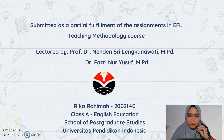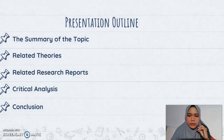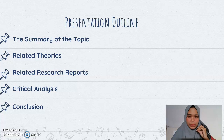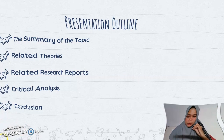For the presentation outline, it will be elaborated into five points: the first one is the summary of the topic, then related theories, related research reports, critical analysis, and the last one is the conclusion.